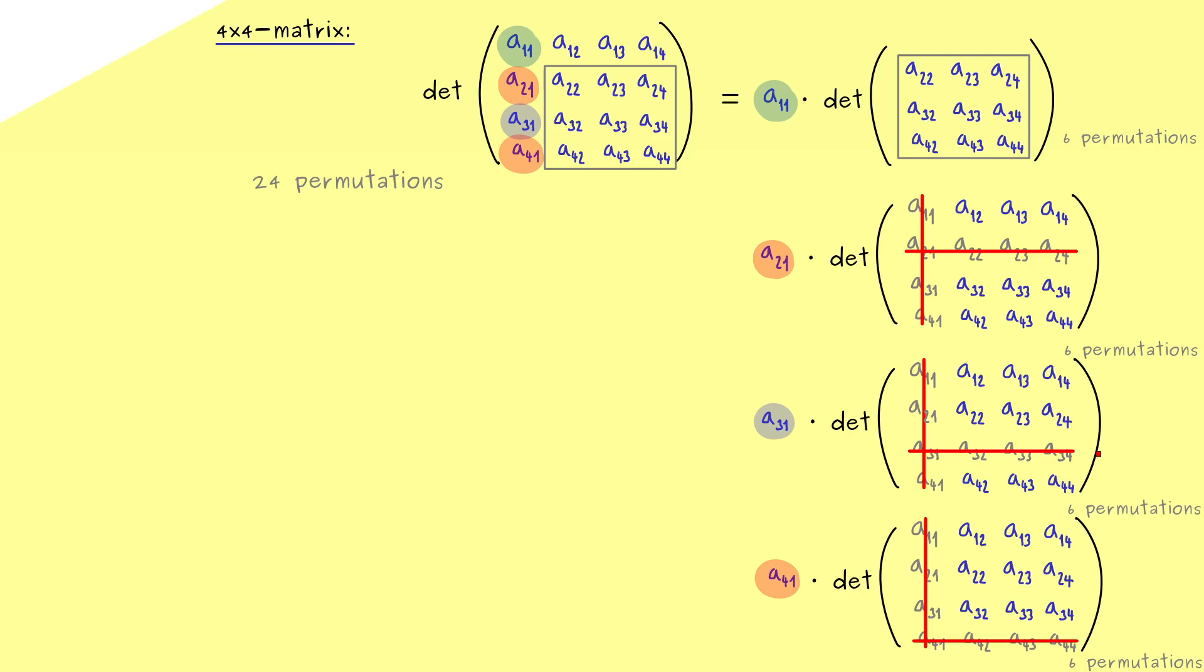And then you see, we have all the 24 permutations, no one is missing. And then you would say, by the Leibniz formula, we just have to add them up. However, this is not correct because we also have to include the sign of the permutations. And this results then in two plus signs and two minus signs. It simply means that the sign of the permutations for these two cases here is already correct, but we have to flip it for the other two cases.